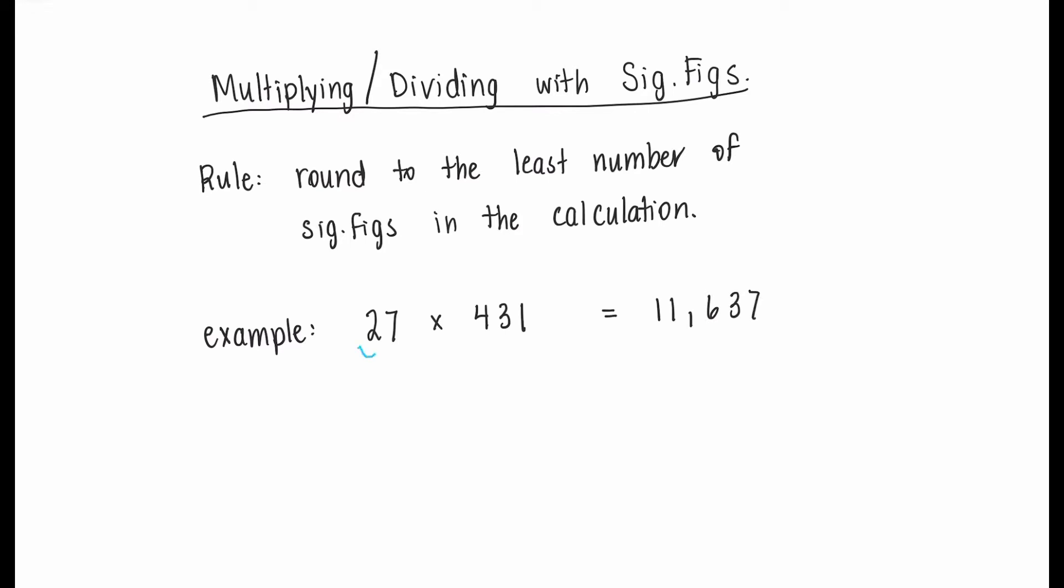Now the next step is to look at each value that you used in this multiplication. Now 27 has two significant figures. 431 has three significant figures. And the rule that we're going to follow is to round to the least number of significant figures, and in this example, that's two sig figs.